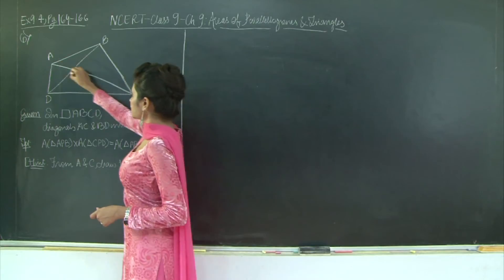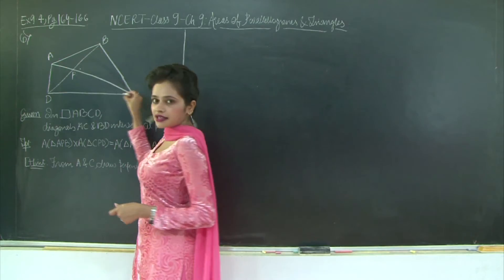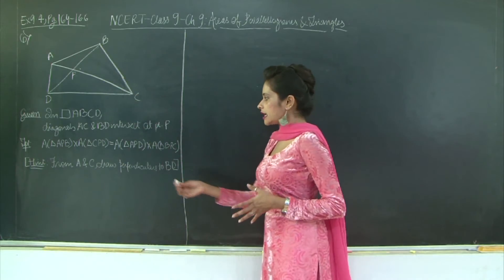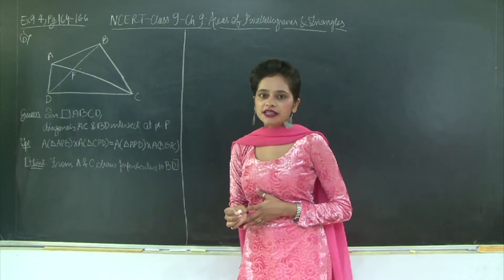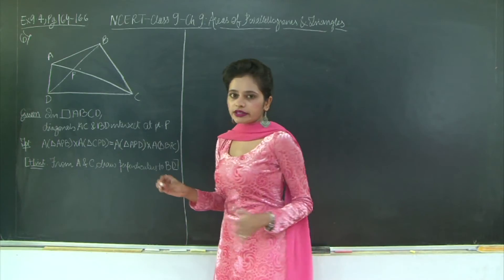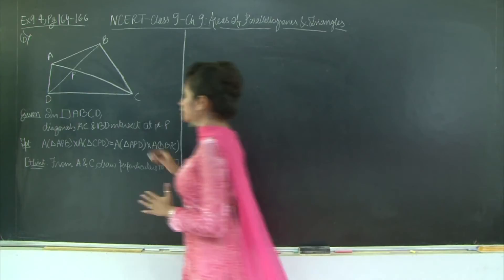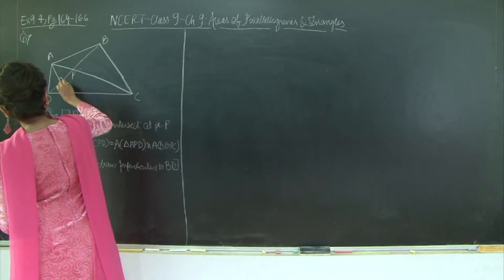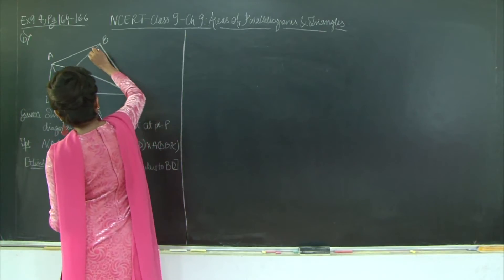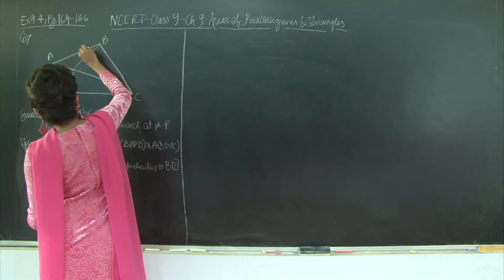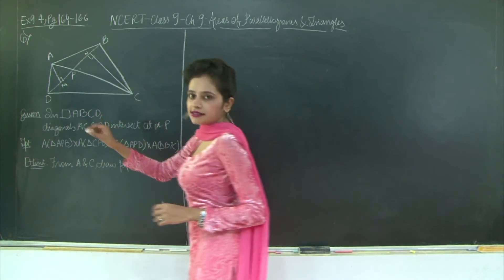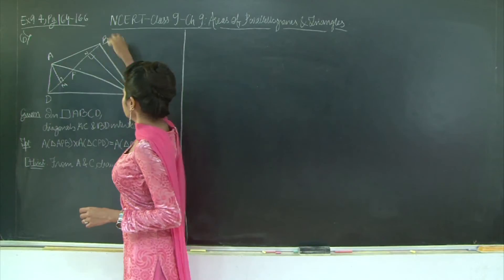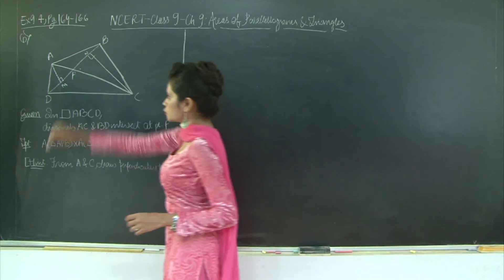So we need to prove that the area of this triangle multiplied by this triangle is equal to the area of this triangle multiplied by this triangle. We've been given a hint to draw perpendiculars from A and C to BD. So we will draw AM and CN perpendicular to BD.